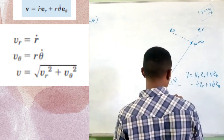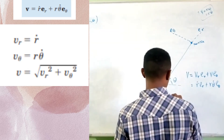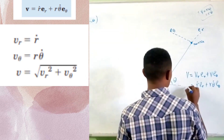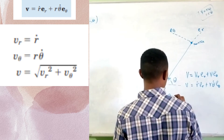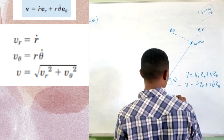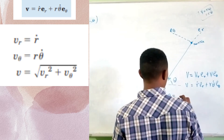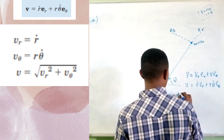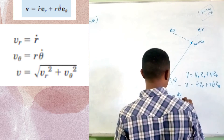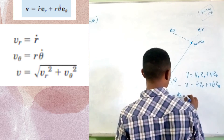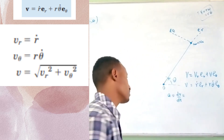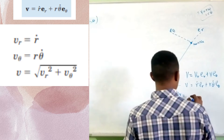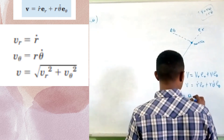Acceleration is derived by taking the derivative of V with respect to dt. The acceleration has components along both the radial and angular directions.